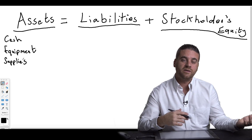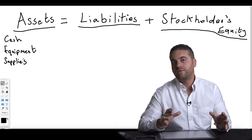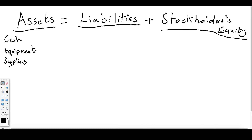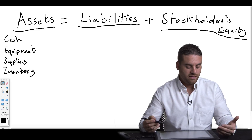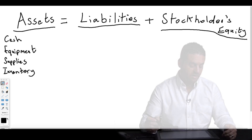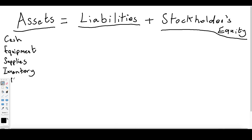Once supplies are used, they no longer have value and are no longer assets — they have to be transferred elsewhere. If it is a merchandise company, they will probably have inventory, which is how they do business: they buy inventory and sell it to make money. We can also list building and land as asset accounts.